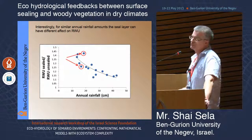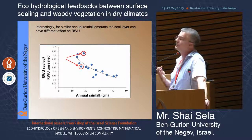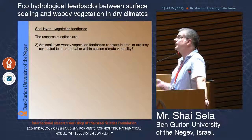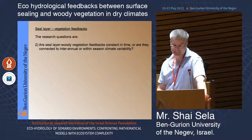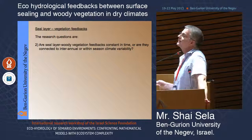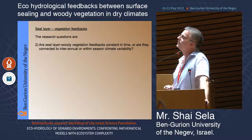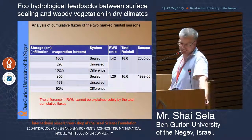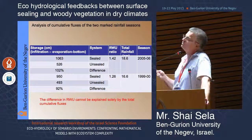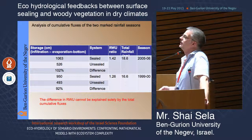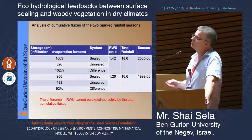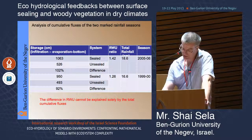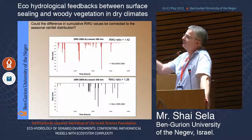Interestingly, for similar total rainfall amounts, you can find very different root water uptake ratios between sealed and unsealed systems. This brings up the second research question: are the seal layer woody vegetation feedbacks constant in time, or connected to interannual or within-season climate variability? Looking at cumulative fluxes over the whole rainfall season — total storage, total infiltration minus total evaporation minus total bottom flux — the difference between the systems is quite similar, so the difference in root water uptake cannot be explained solely by total cumulative fluxes.